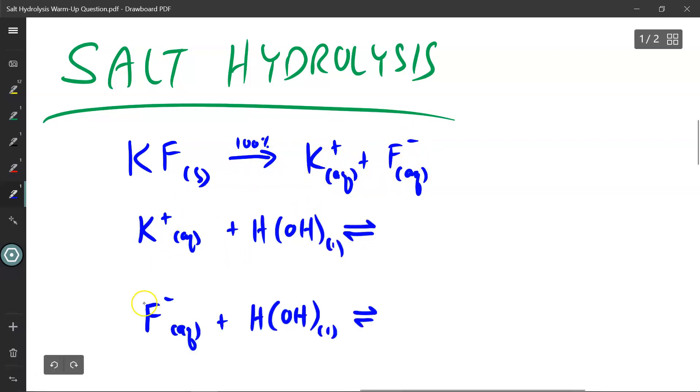These ions then have the ability to react with water in a single displacement reaction. So the cation potassium will displace the cation hydrogen, pushing it out so you have hydrogen ions flowing around and potassium hydroxide. However, we know that potassium hydroxide is a group 1 hydroxide, meaning it is a strong base.